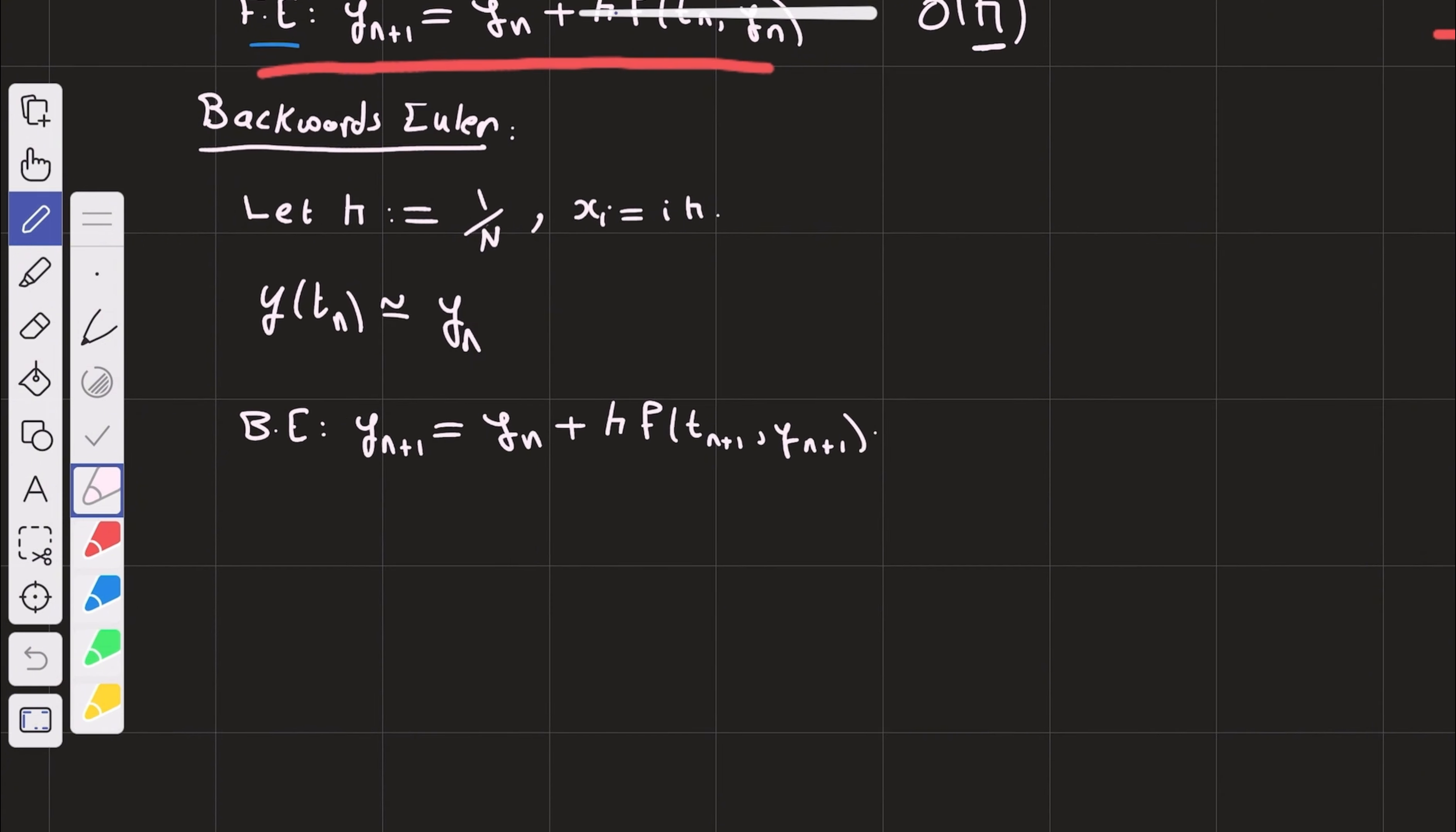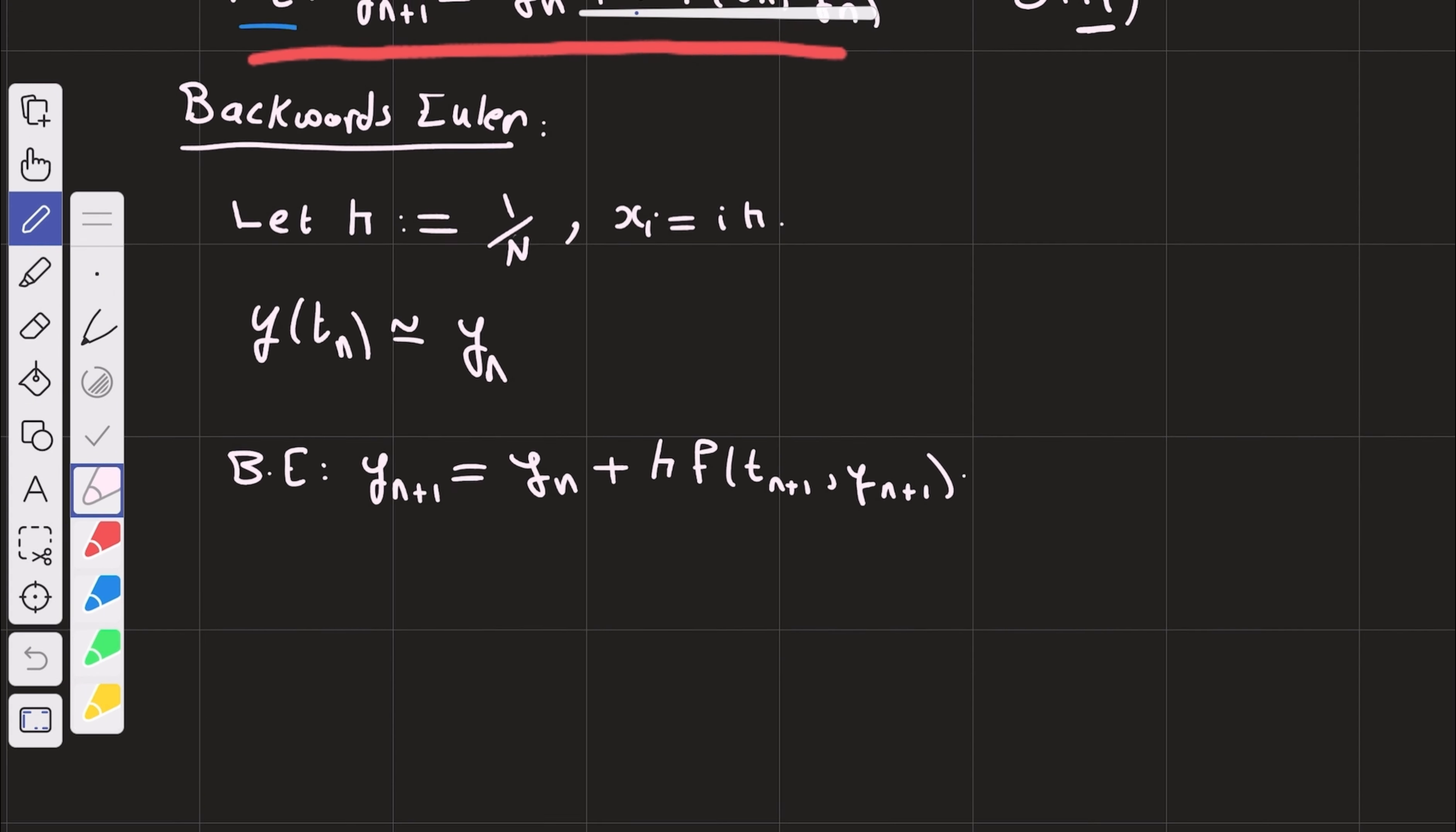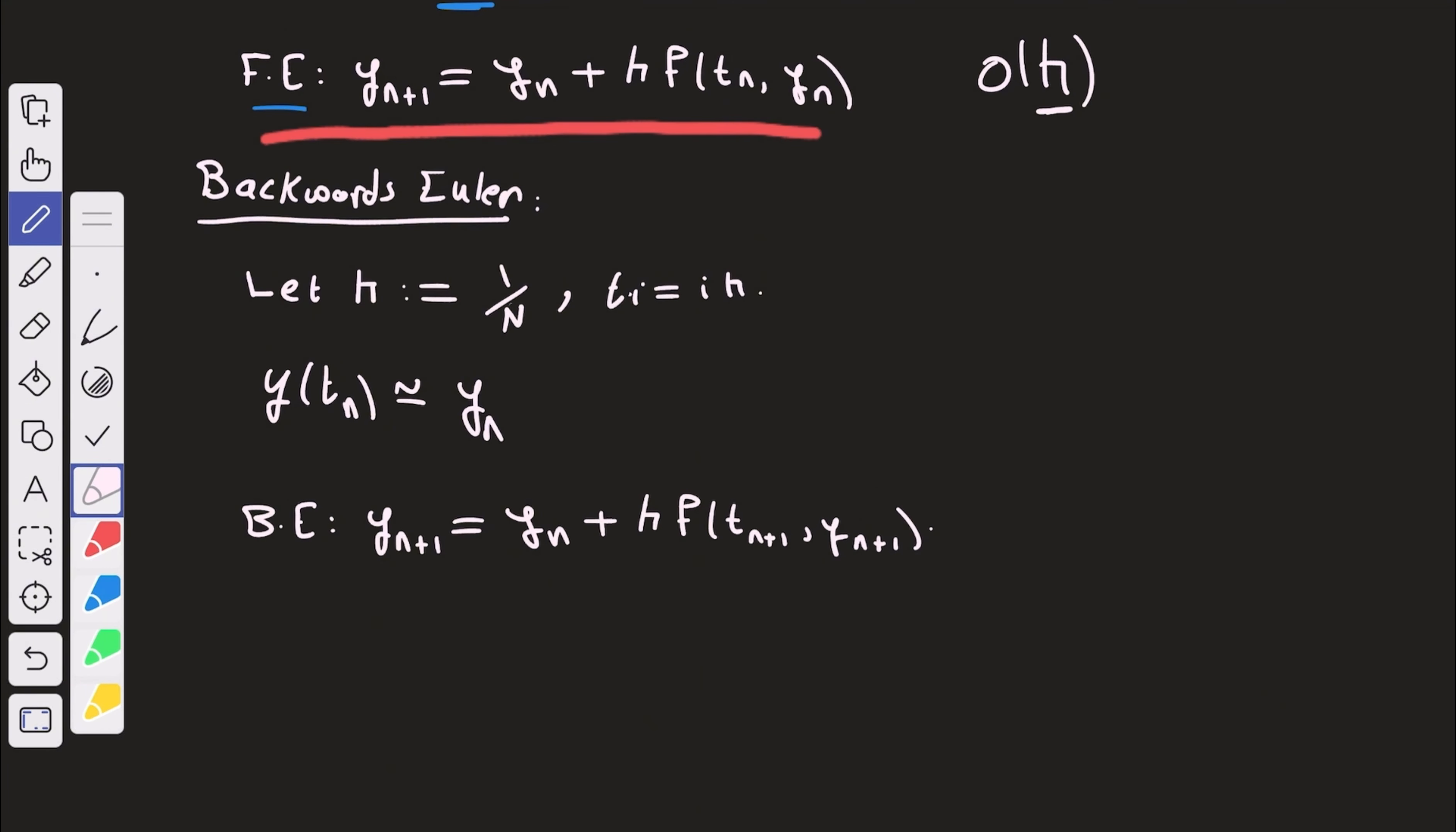Now, what is the idea of backwards Euler? It's just a similar method to forward Euler's method. Of course, we're going to start by discretizing the space, by introducing a mesh size. And we partition the domain 0, 1 into points ti. And we wish to approximate y at tn by y sub n.